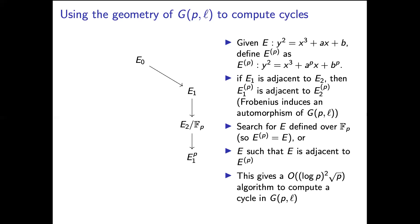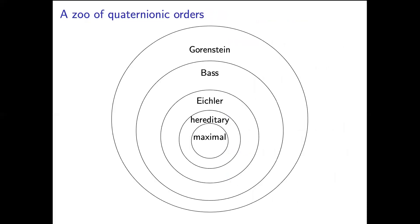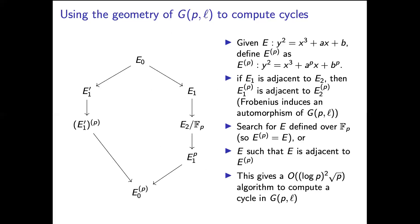This means that E_2 has to be also adjacent to E_1^p and E_1^p must be adjacent to E_0^p. And so we now have a path from E_0 to E_0^p. So we'll repeat this step again and say maybe this time we find a curve which is adjacent to a Galois conjugate curve. And so now we have a second path from E_0 to E_0^p which means we have a cycle.